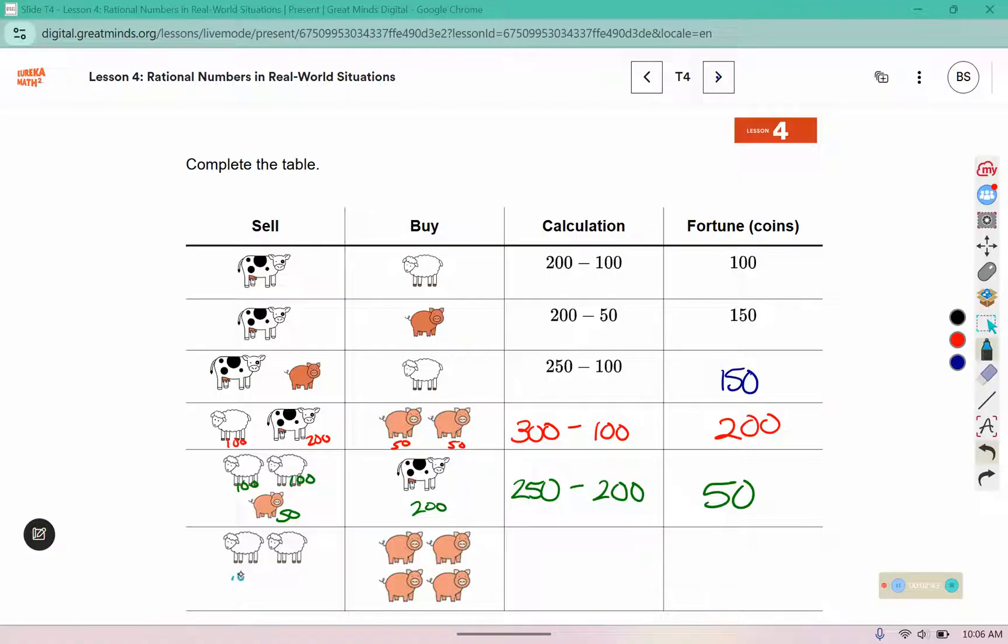This is 100 and 100, this is 50, 50, 50, 50, and 50, which is also 200, so they didn't have any fortune left over.